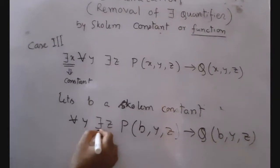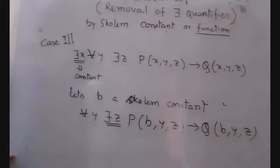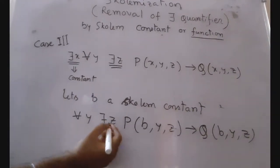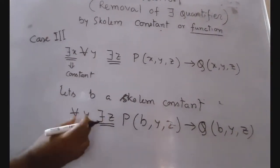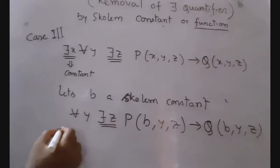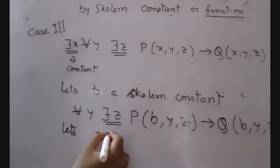We can see there is an existential quantifier Z, so we have to replace this Z. The Z will be replaced by a function because the universal quantifier Y precedes Z. So let G(Y) be...